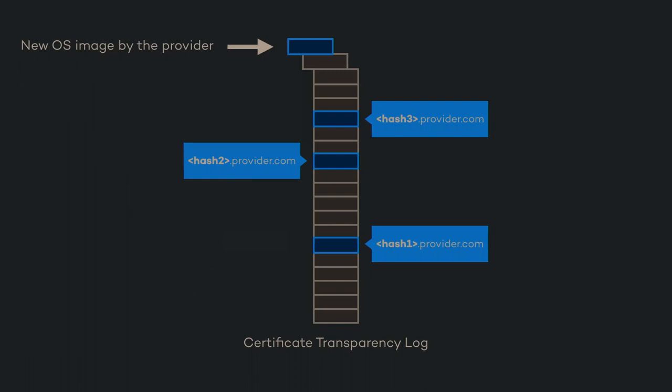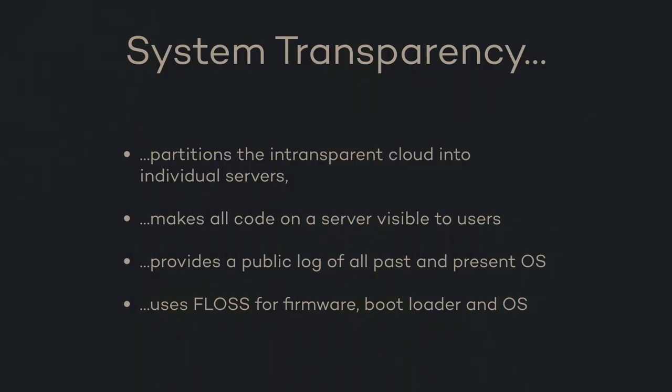Because the CA that issues the certificate is working with the certificate transparency log, we have the hash of the operating system image inside the append-only certificate transparency log that's run by Cloudflare. Now we have an open, append-only, and public certificate transparency log of all the current and past operating system images that have been deployed on a particular system. And because stboot, before it boots, checks that the certificate transparency log contains such a certificate, you can make sure that everything that boots on a particular server has been verified.